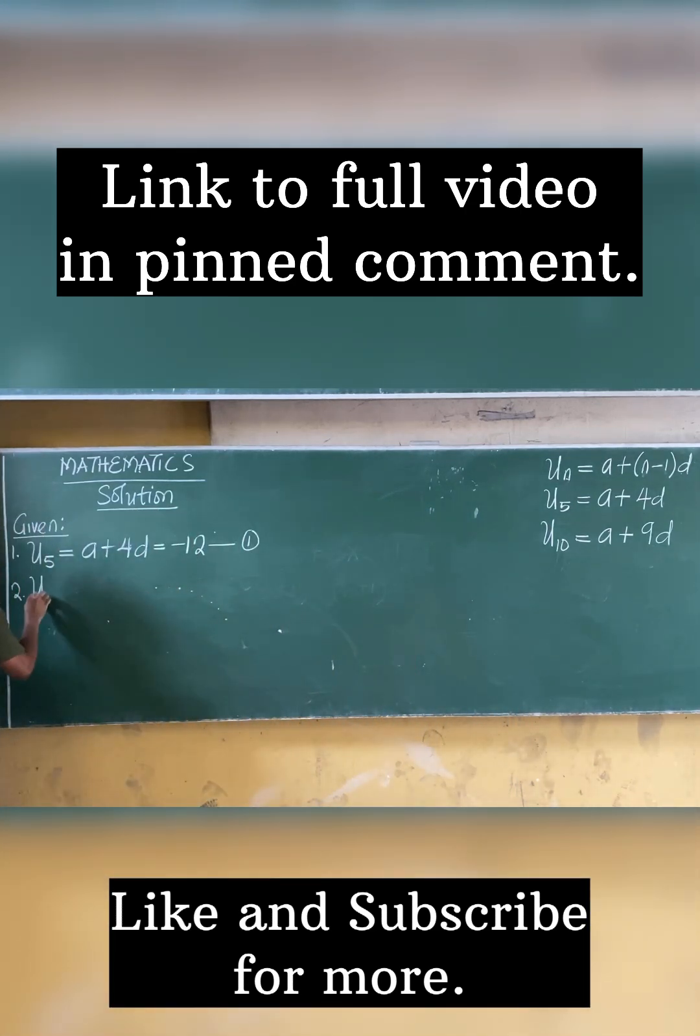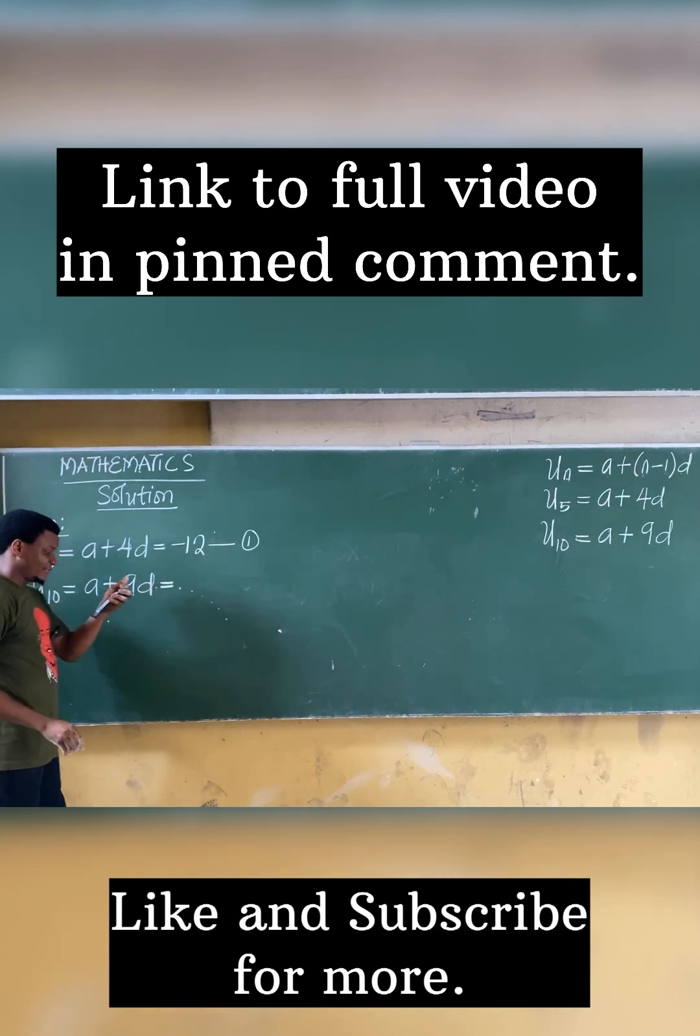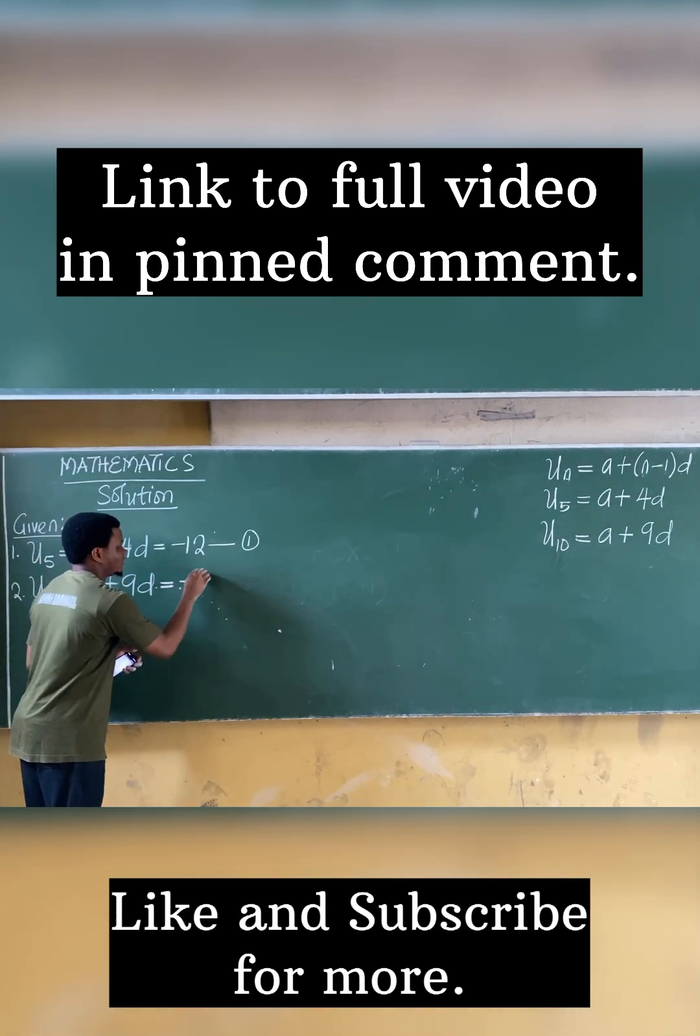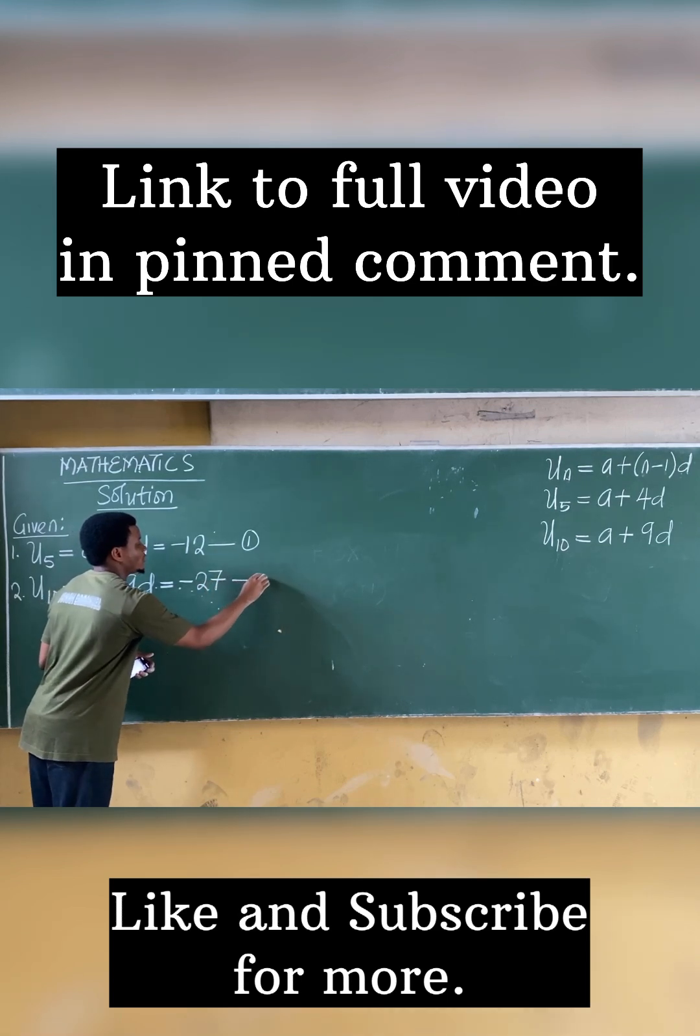So we're having that U10 is equal to A plus 9D, and we said the 10th term is equal to minus 27. Call this your second equation.